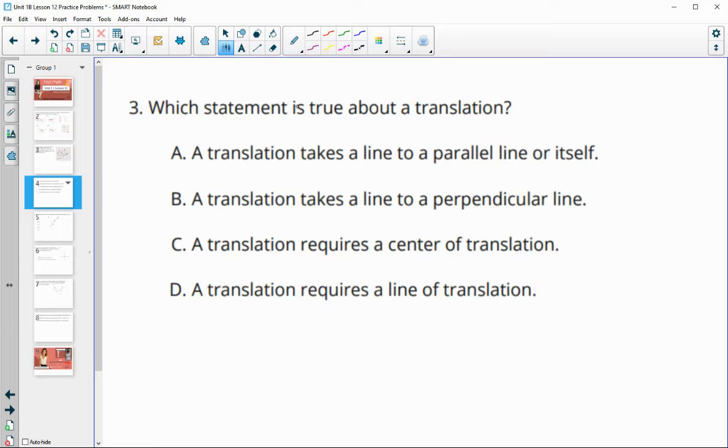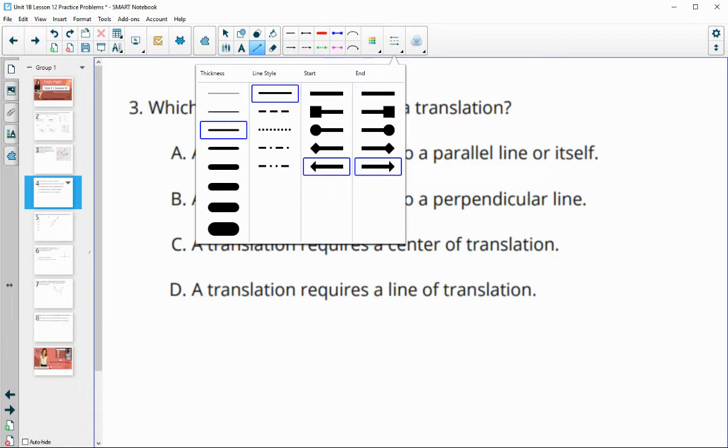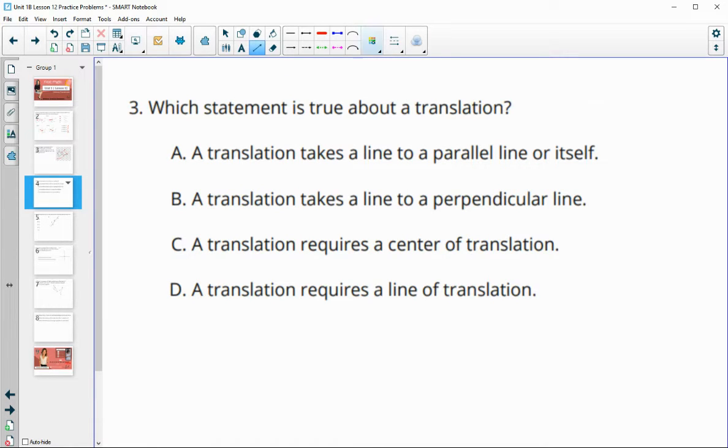Number three, which statement is true about a translation. So translation takes a line to a parallel line or to itself. So let's take a look at a line here and think about if we did a translation. So if we translate this line, that just means we're going to move it. Something like this. Okay. It's just going to slide around. So definitely appears to be taking it parallel or kind of to the same line. So A sounds good.